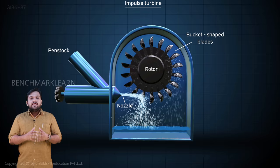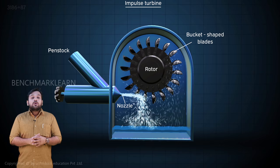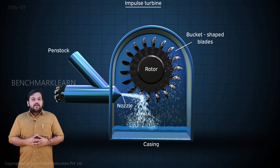In a Pelton wheel turbine, the rotor is connected to a gearbox which modulates and transmits the power to a generator at a specified speed. This produces electricity at the required frequency. The whole Pelton wheel turbine system is enclosed in a casing to prevent the loss of water and also to protect the components from the external environment. The water which comes out of the turbine flows through a portion called a race and exits the system.